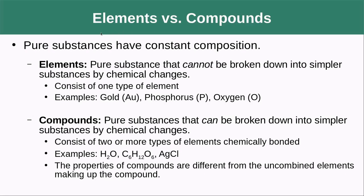Elements versus compounds — both are pure substances, meaning they have a constant composition throughout. If you take any piece of a pure substance it's going to be the same as the whole. Elements are pure substances that cannot be broken down into simpler substances by chemical changes and consist of just one type of element — examples include gold, phosphorus, and oxygen. Compounds are pure substances that can be broken down into simpler substances by chemical changes — they consist of two or more types of elements chemically bound together.